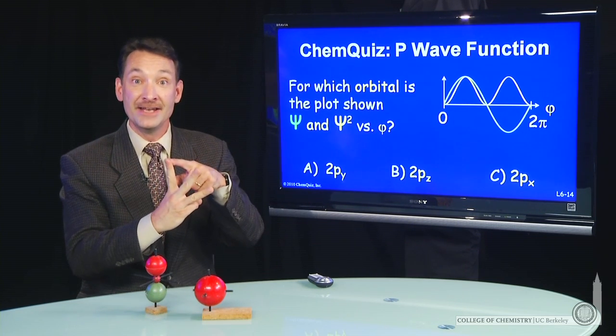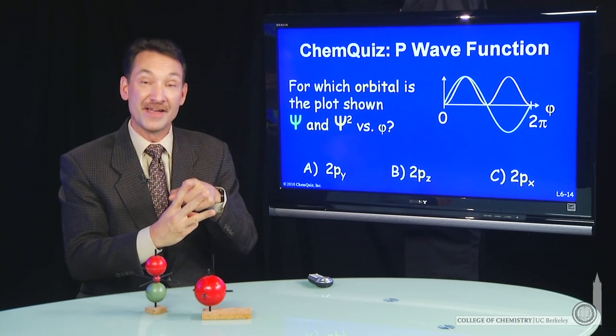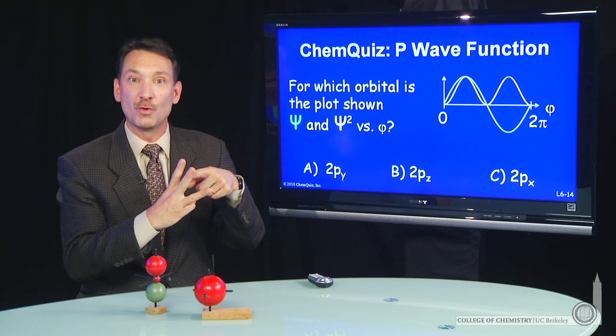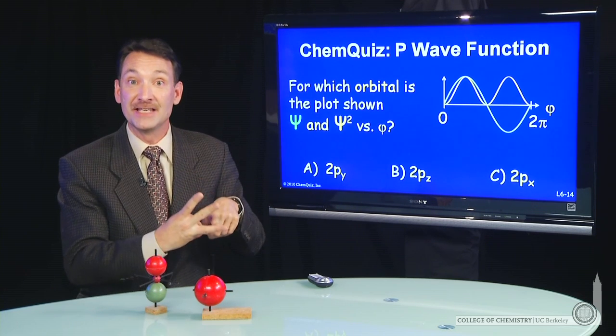So we need a value of n, a value of l, and a value of m sub l. If the value of n is 2, the value of l is 1, and the value of m sub l is 0, that's a p orbital.